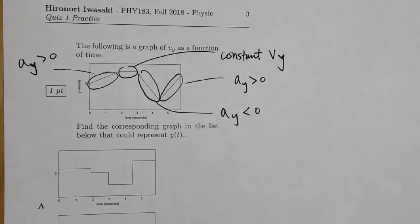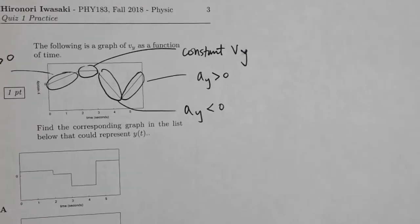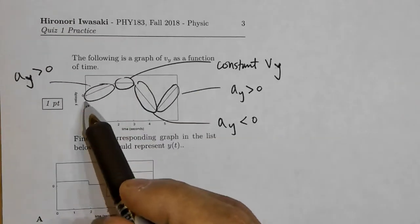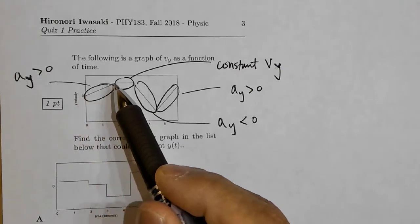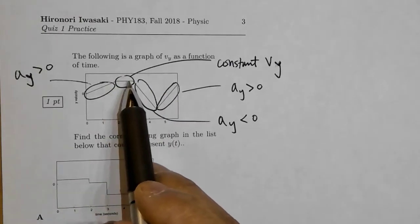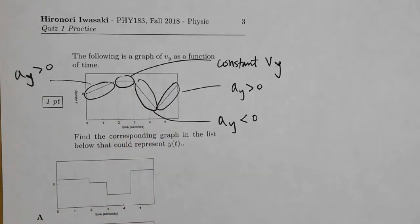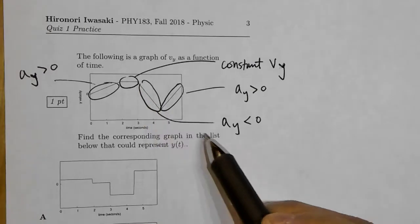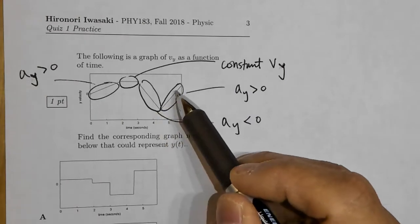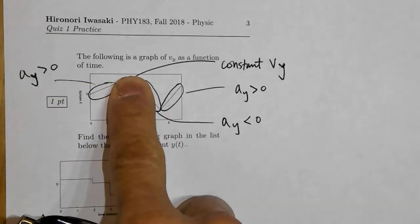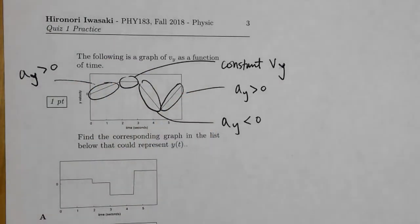The approach is to analyze what's happening in each stage. In the first part, velocity increases linearly — so acceleration is positive and constant. In the middle section, velocity is constant and positive — so acceleration is zero. Then velocity decreases — acceleration is negative. Then it reverses and acceleration is positive again.